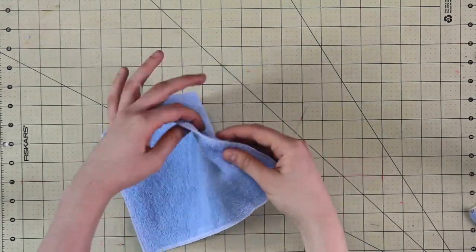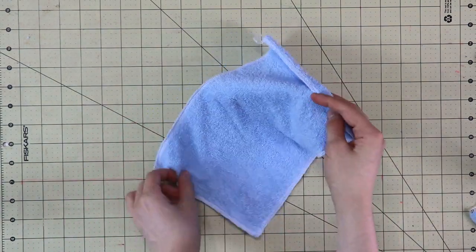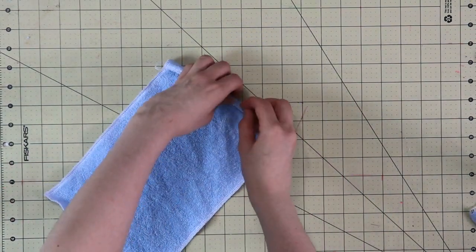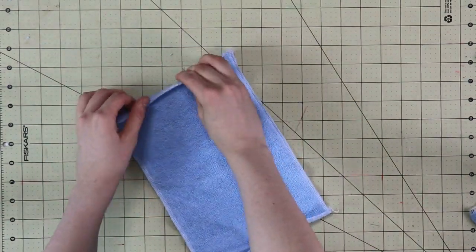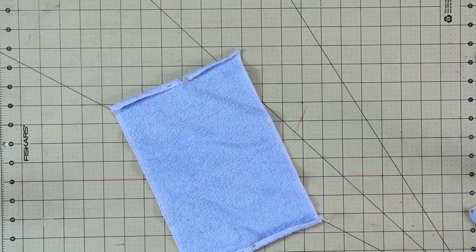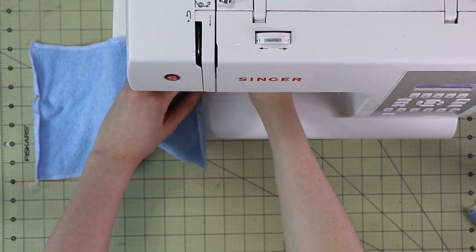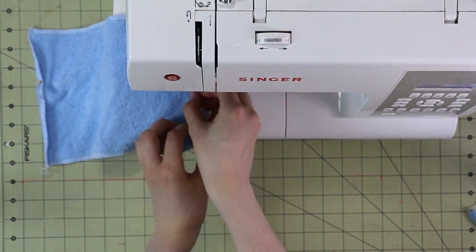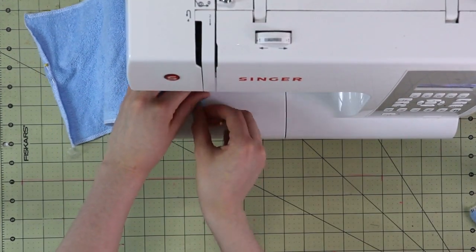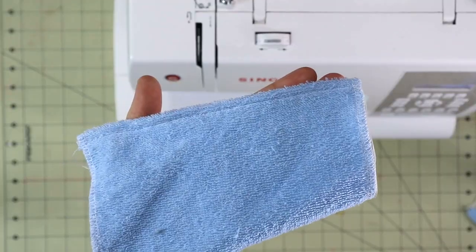Now take your rectangle and fold the two short edges by about a quarter of an inch in towards one another like you see me do on screen. Pin them in place and let's stitch them down with a straight stitch that will create a really nice and even edge for the opening of our soap holder.